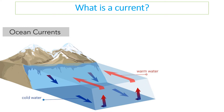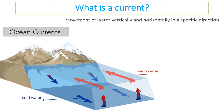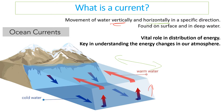The idea of currents links to convection of water. Warmer water generally rises and cold water generally sinks. This change in temperature causes the movement of water around different parts of the world. Ocean currents are the movement of water both vertically — upwards — and horizontally, sidewards in a specific direction. This happens both at the surface and deep down in the oceans.